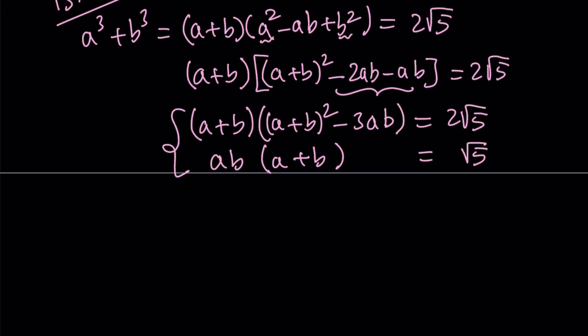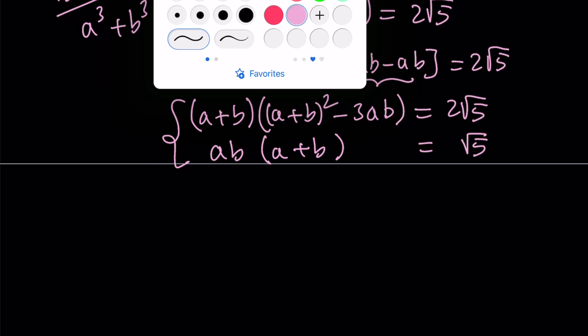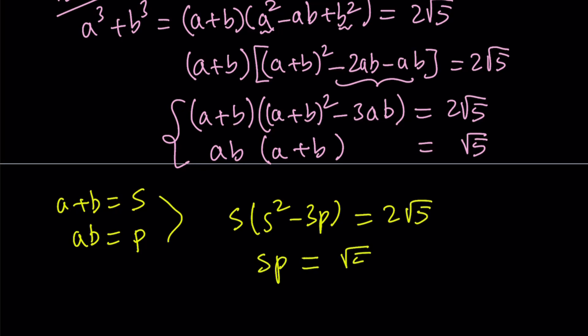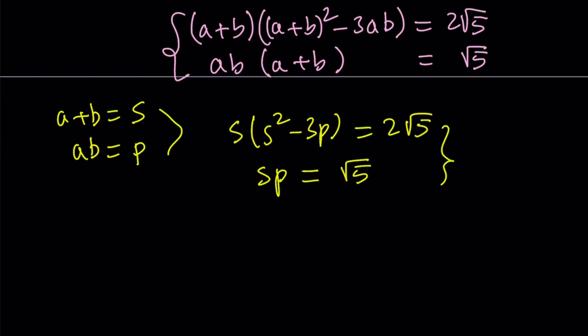First of all, let's do some naming. How about calling a+b sum or s, and ab p. And then this is what we get: s(s² - 3p) = 2√5 and sp = √5. So here's one thing we can do. We can divide these things side by side because that's going to help us cancel s.